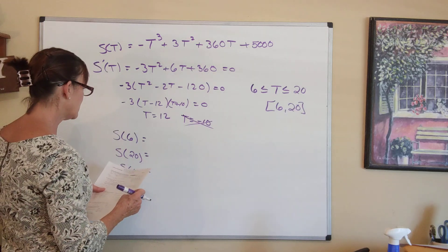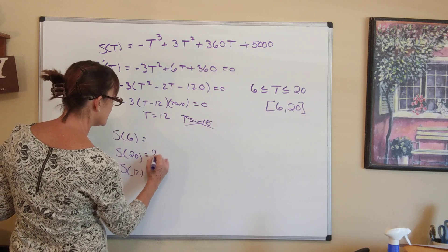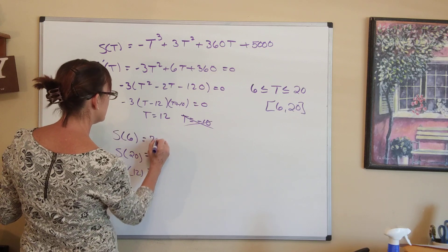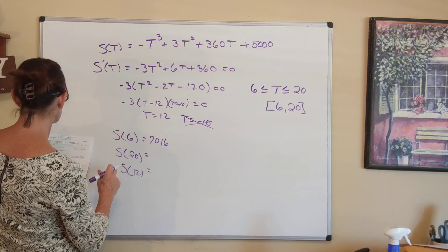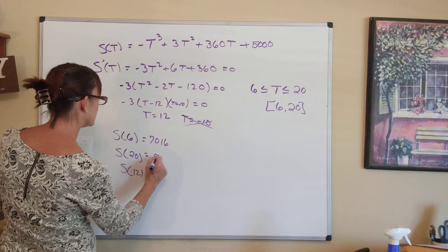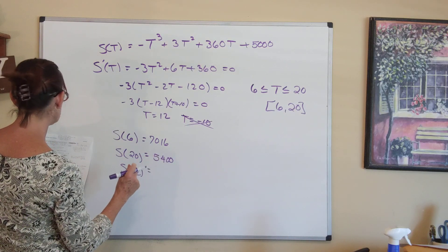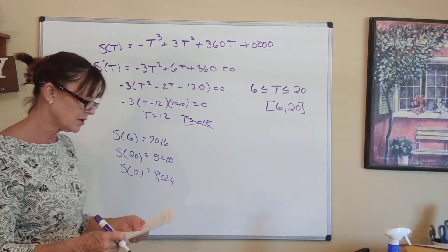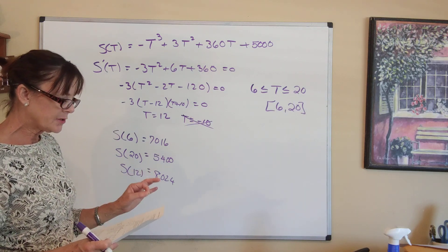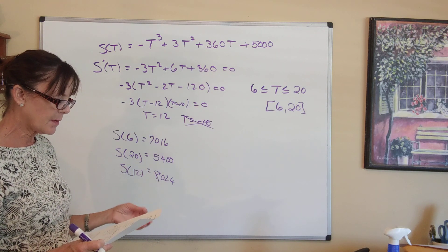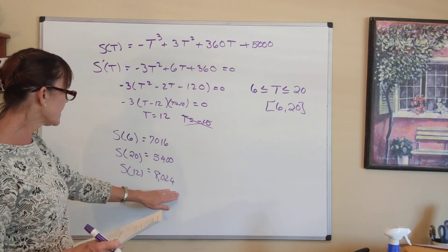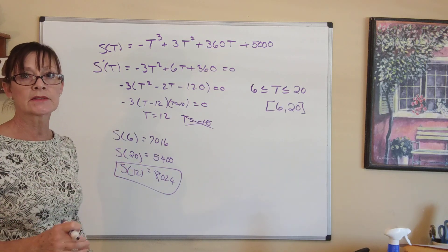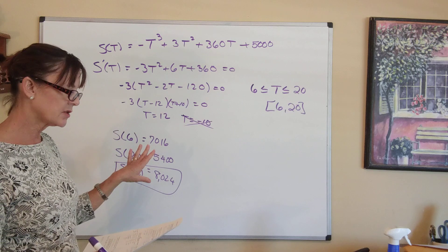Plugging into the original: S(6) = 7,016; S(20) = 5,400; and S(12) = 8,024. The maximum is 8,024 and it occurs when the temperature is 12°C. So the water temperature that produces the maximum number of salmon swimming upstream is 12 degrees Celsius.